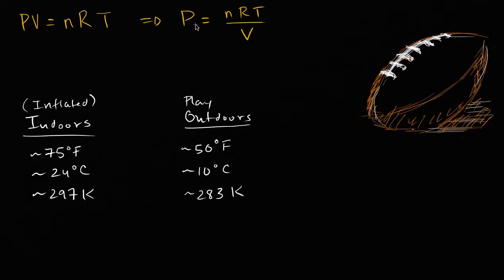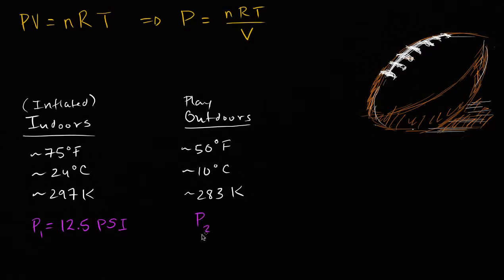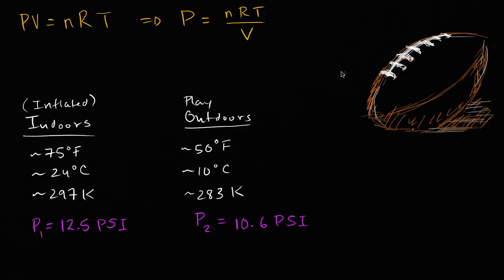The pressure drop actually measured was a gauge pressure drop — and this is an important point, because it was glossed over in some of the initial analyses. The gauge pressure indoors, where the ball was inflated, was 12.5 pounds per square inch. The gauge pressure outdoors, where the balls felt deflated or had less pressure, was 10.6 pounds per square inch. To see if these numbers are consistent with no foul play, let's simplify the ideal gas law for this circumstance.